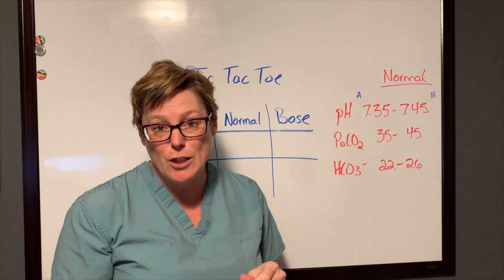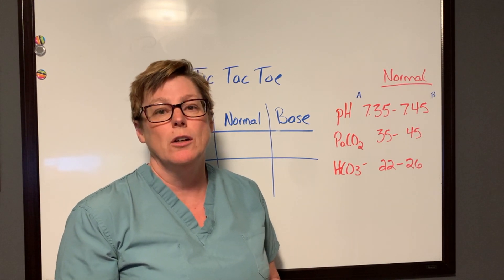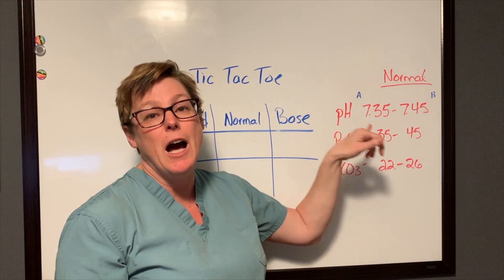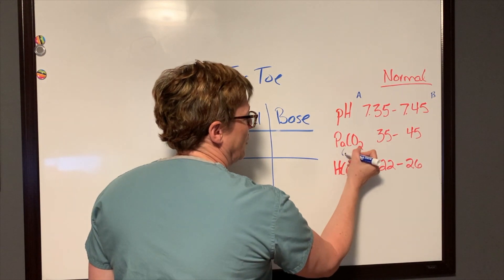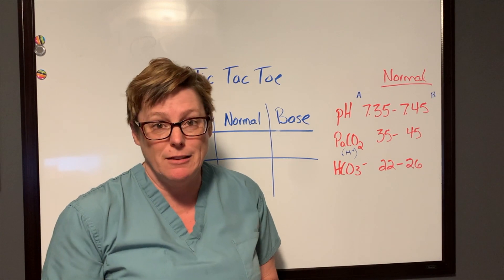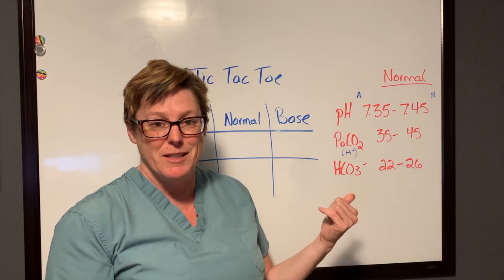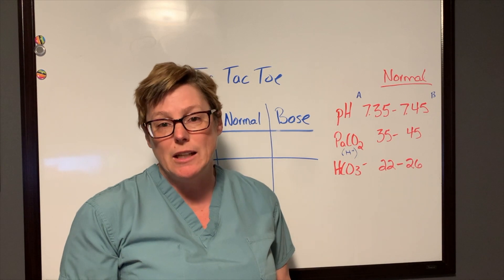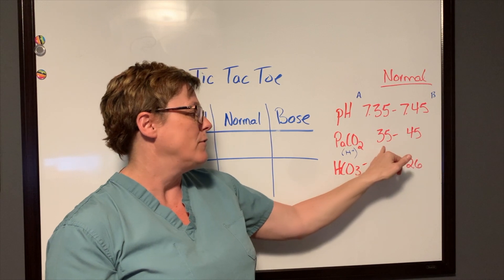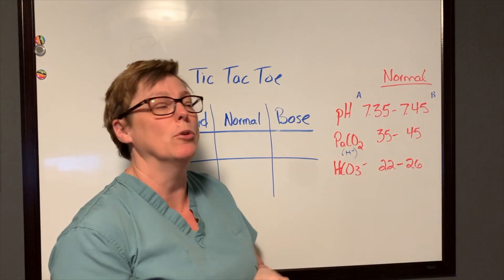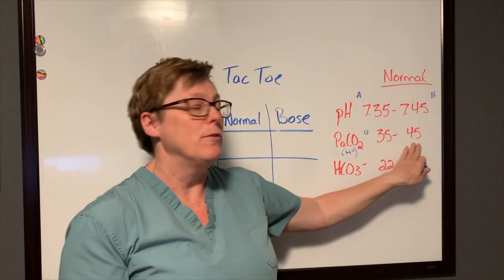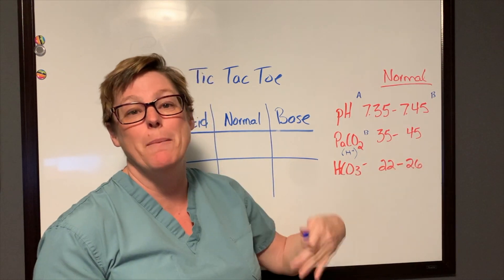Our PaCO2 stands for the partial pressure of arterial CO2 — carbon dioxide. This represents the hydrogen ions. Hydrogen ions are a positive element; the more positive we have, the more acidic our environment. So when it comes to our PaCO2, if I have too little hydrogen ions available I'm actually basic, and if I have more than I need of hydrogen ions it's going to become more acidic.